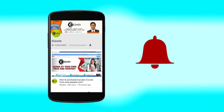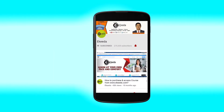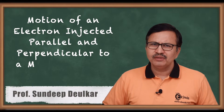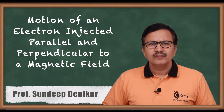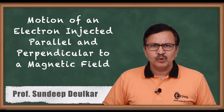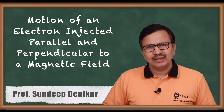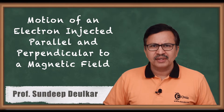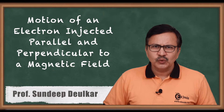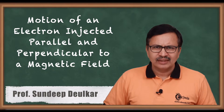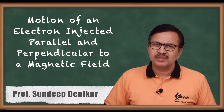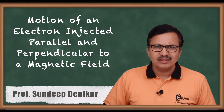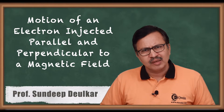Click the bell icon to get the latest videos from Ikeda. Hello friends. In this video we are going to learn about the resultant motion of an electron that is injected parallel to the magnetic field or perpendicular to the magnetic field. These are the two cases that we will be studying separately.